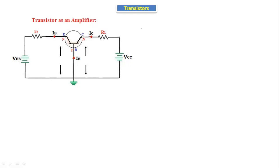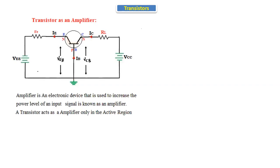In this circuit, VEB is the voltage between the emitter and the base, and VCB is the voltage between the collector and the base. The amplifier is an electronic device that is used to increase the power level of an input signal — it increases the input signal strength.